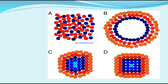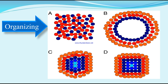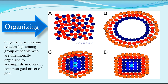We can see: A — some scattered, B — some organized, C — well organized, and D — perfectly organized. This represents organizing. Organizing is creating relationships among a group of people who are intentionally organized to accomplish an overall common goal or set of goals.